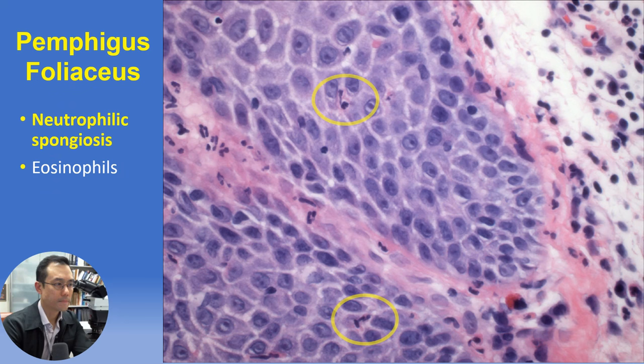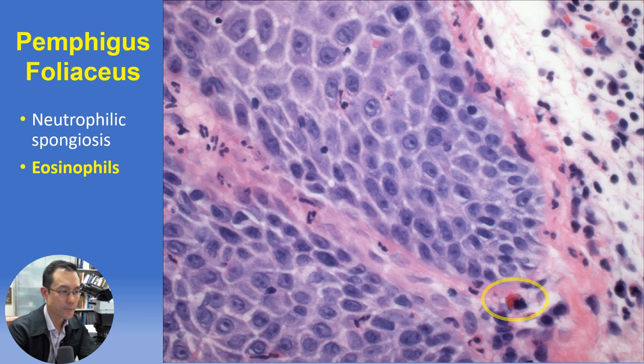In mild or early cases of pemphigus, characteristic histopathologic features may not be present at all. One might only see non-specific changes with subtle clues such as neutrophilic spongiosis or eosinophilic spongiosis, or simply sparse eosinophils near the junction — most characteristically associated with early bullous pemphigoid but as shown here, also seen in pemphigus.